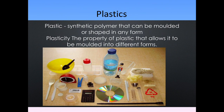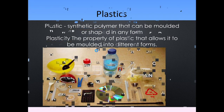Plastics — a plastic is a synthetic polymer that can be molded or shaped in any form. A plastic bottle can be changed into another bottle, a polythene bag, or even plastic cutlery. What is plasticity? The property of plastic that allows it to be remolded into different forms is known as plasticity.